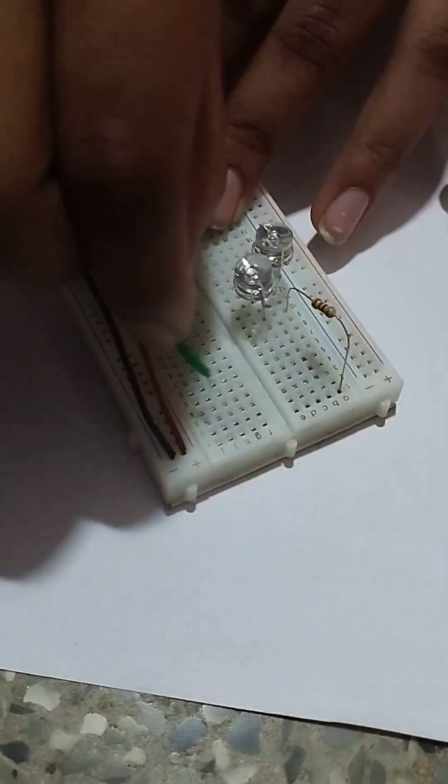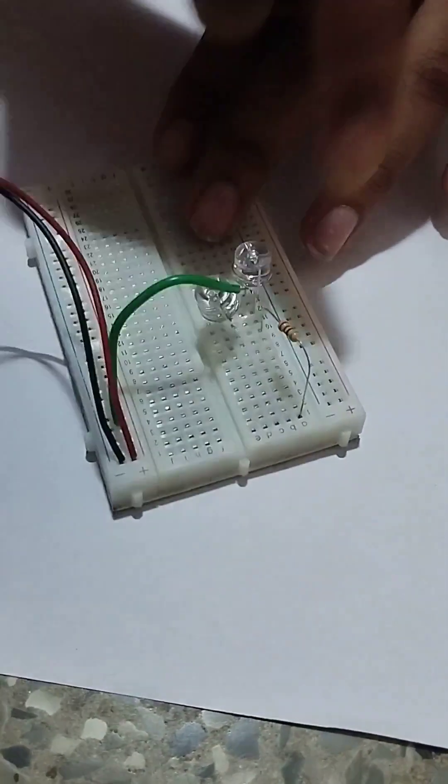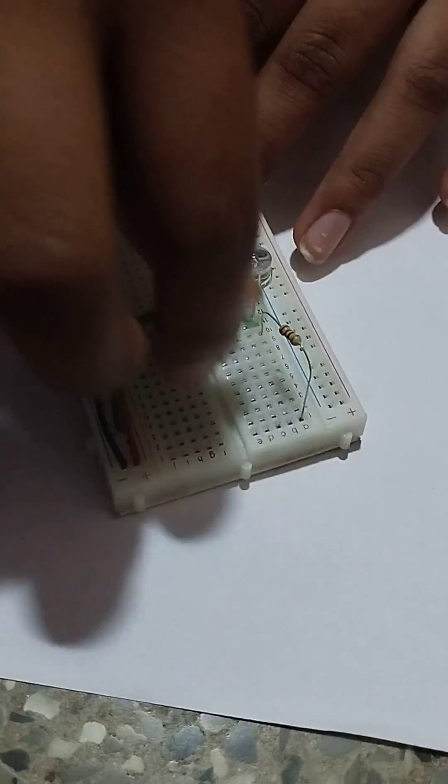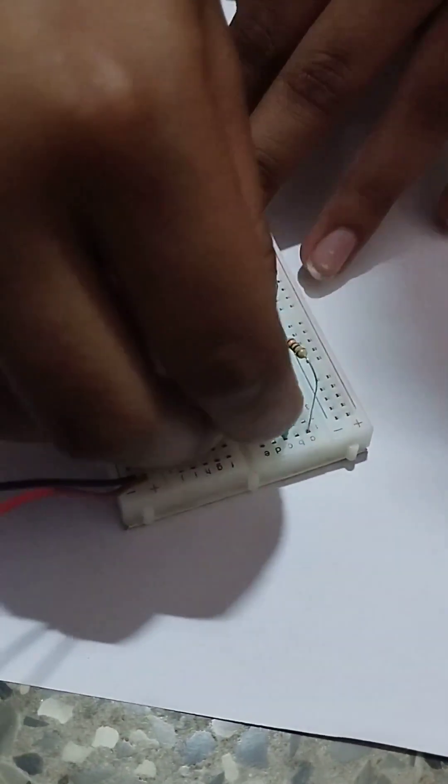Connect anywhere from the positive of the battery to the resistor's first terminal. So I am connecting in the C row, I mean C column.